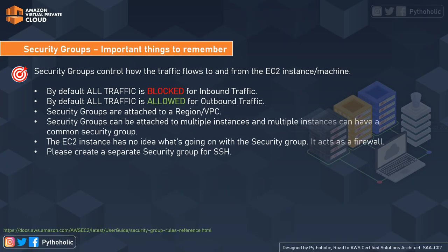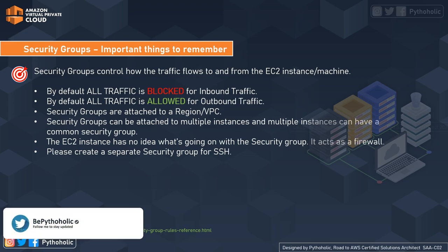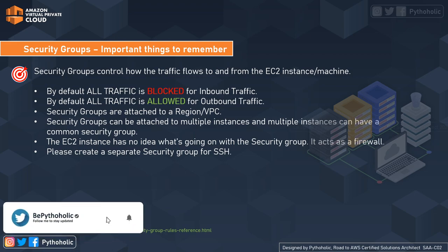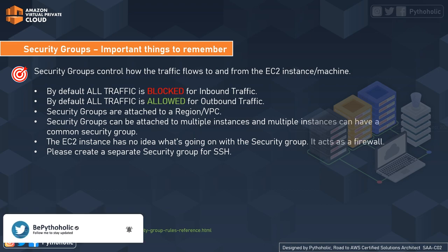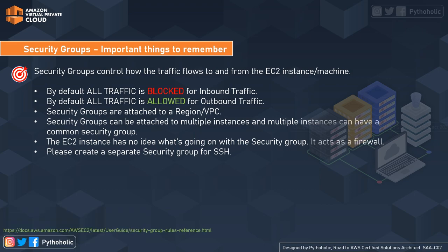Let's recap the most important points to remember for security groups. Security groups control how traffic flows to and from EC2 instances and act like a virtual firewall. By default, all inbound traffic is blocked — remember that all inbound traffic is blocked. And all outbound traffic is allowed by default.